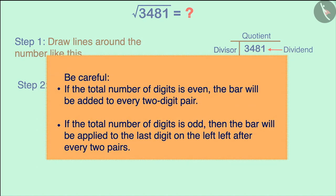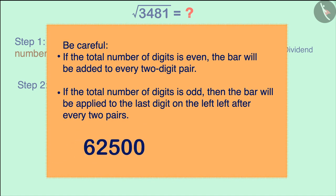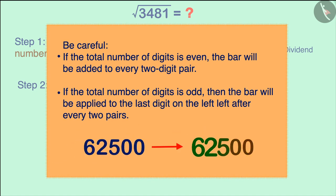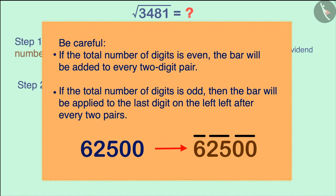If the total number of digits is even, we place the bars on the numbers the same way. If the number of digits is odd, like the total number of digits in this number is 5, then the bar will be repeated on the left side the same way.